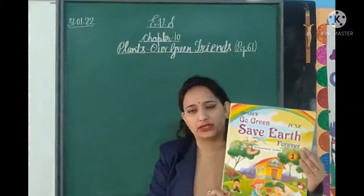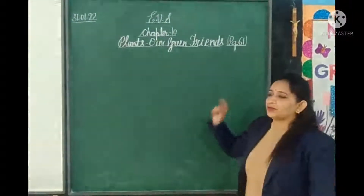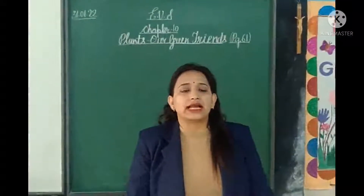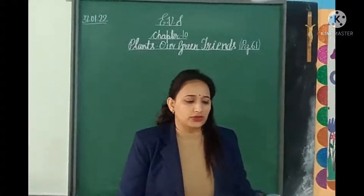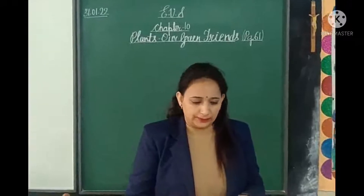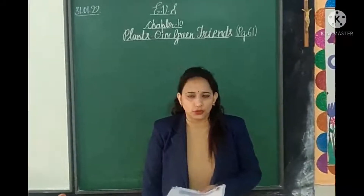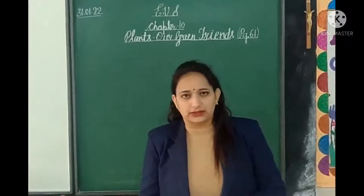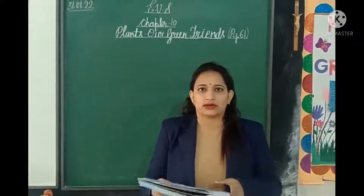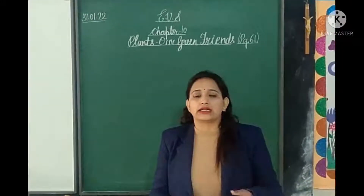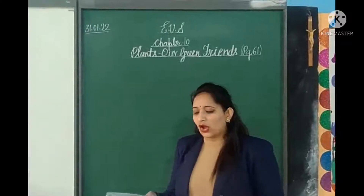All of you, open your EVS book and take out page number 61. In previous classes we revised Chapter 9. Today we are going to revise Chapter 10. As you all know, plants give us fruit, food, and shelter. Plants give us shade in hot summer seasons, and we sit under plants to get fresh air to breathe — that is oxygen.